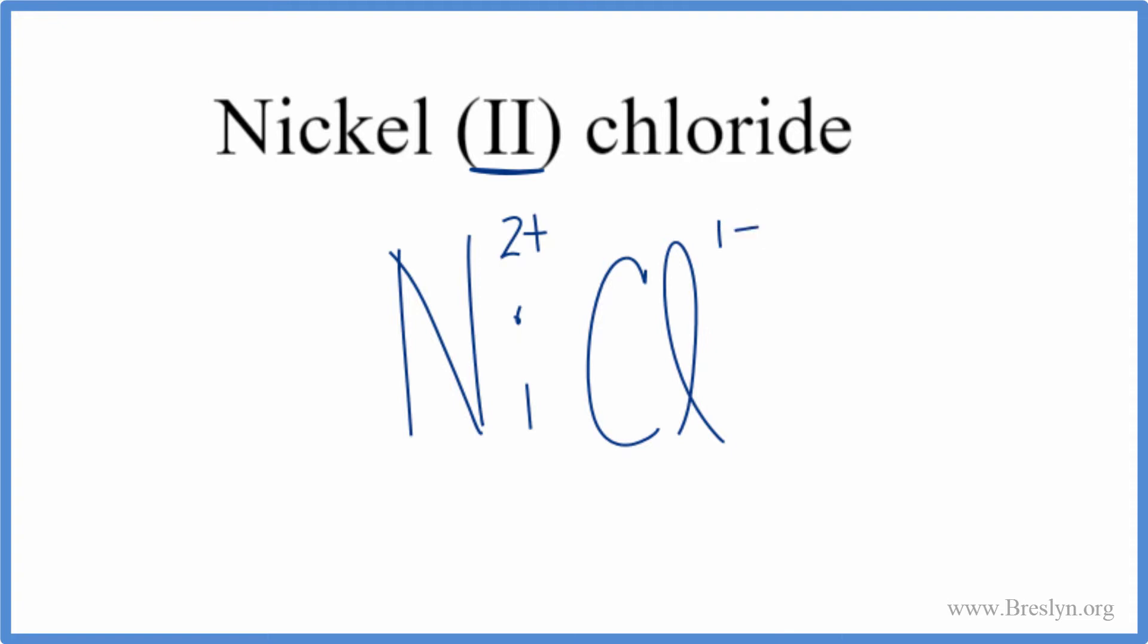So we'll use something called the crisscross method. We'll move the one down here and then the two over here. We don't write the one by convention. Get rid of this. And that's it. That's the formula for nickel(II) chloride.